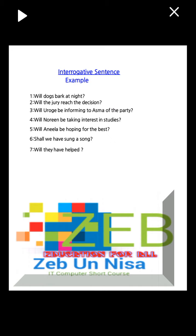Interrogative sentence examples: number one, will dogs bark at nine? Number two, will the jury reach a decision? Number three, will she be informing Asma of the party? Number four, will Noreen be taking interest in studies? Number five, will Anila be hoping for the best? Number six, shall we have sung a song?